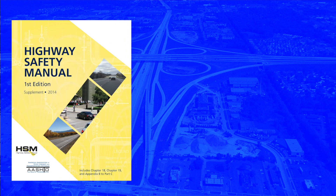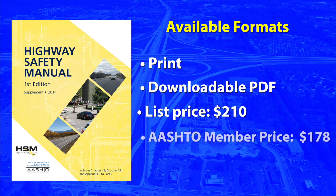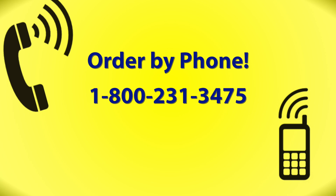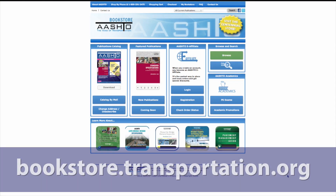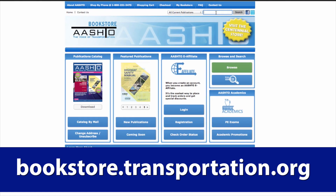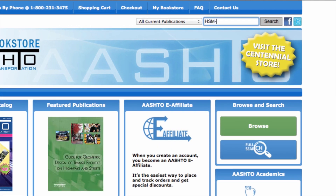This new Highway Safety Manual supplement is available in print or as an online downloadable PDF at a cost of $210, or $178 for AASHTO member organizations. To order a copy, contact the AASHTO Bookstore at 1-800-231-3475, or visit the AASHTO Bookstore online at bookstore.transportation.org and search by the publication's item code, HSM-1S.